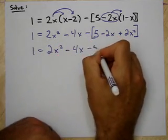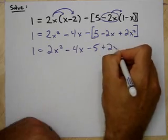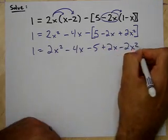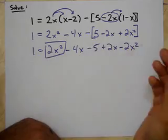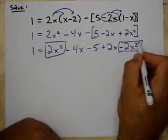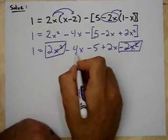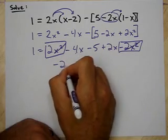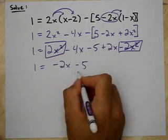So, this becomes negative 5, positive 2x, negative 2x squared. Well, I have a positive 2x squared. Let's combine like terms negative 2x squared. They cancel each other out. Negative 4x and 2x is negative 2x minus 5 equals 1.